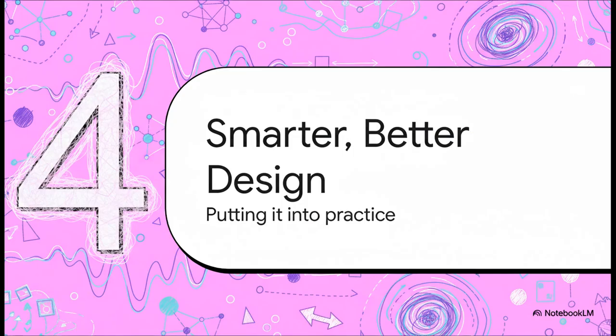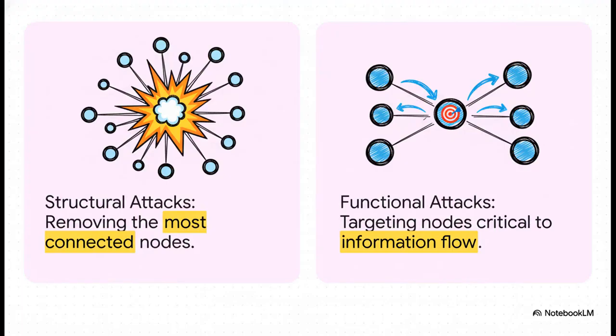This is the really cool part. This isn't just some abstract theory for a whiteboard. It has real, practical uses right now. It lets us finally build smarter systems and design them better because we can finally see where their true weaknesses are hiding. For years, the old way to stress test a network was a structural attack—just take out the biggest, most connected hubs and see what happens. But this new approach is so much smarter. It's about launching functional attacks, targeting the nodes that are most critical to the actual flow of information. They even have a new metric for it called entanglement centrality.